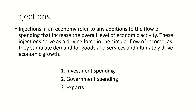The second type is government spending. The government can increase economic activity through spending on goods and services, such as public works projects and transfer payments to households. The third type is exports. Exports refer to goods and services sold by a country to another country. When a country exports more than it imports, this creates a net injection of spending into the economy. These are all considered injections to the economy.